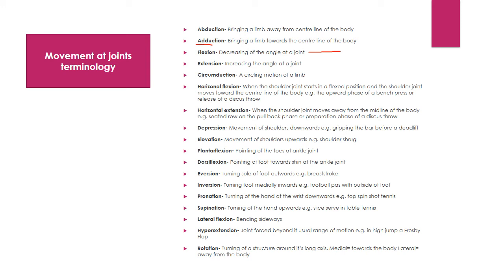Circumduction: a circling motion of a limb. Horizontal flexion: when the shoulder joint starts in a flexed position and moves towards the center line of the body — the pushing up part of a bench press. Horizontal extension: when the shoulder joint moves away from the midline of the body — as when we're pulling back our shoulders when rowing. Depression: the movement of the shoulders downwards, such as when lifting a heavy weight off the floor for a deadlift. Elevation: movement of the shoulders upwards, such as a shrug.